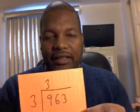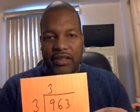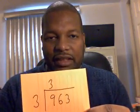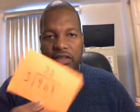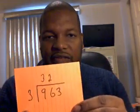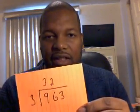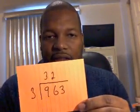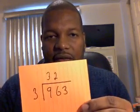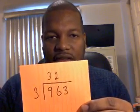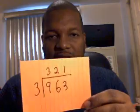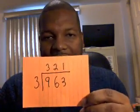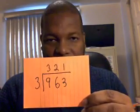Now, looking at the next number, 6. How many times does 3 go into 6? That would be 2. So you write that in. Very simple to do. The last one — how many times does 3 go into 3? Of course, that's a 1. So you write that down, and that's your answer. Nothing else to do but look, ask, and write down the answer.